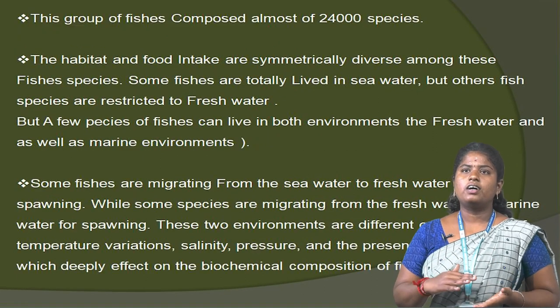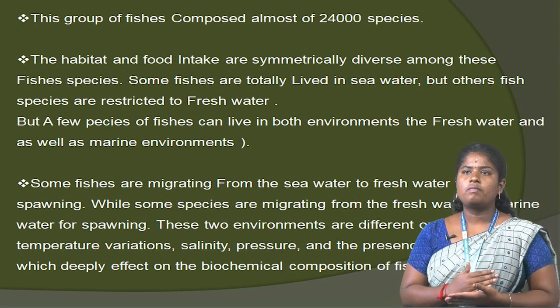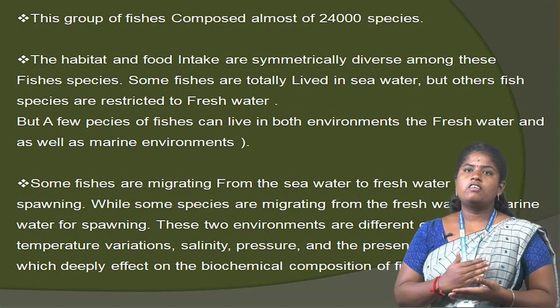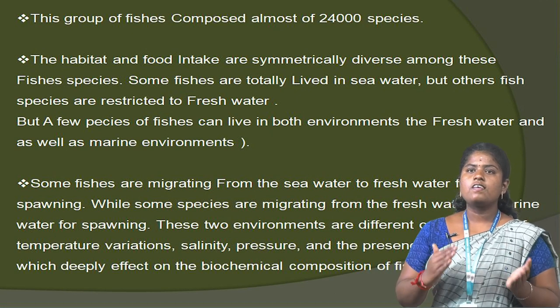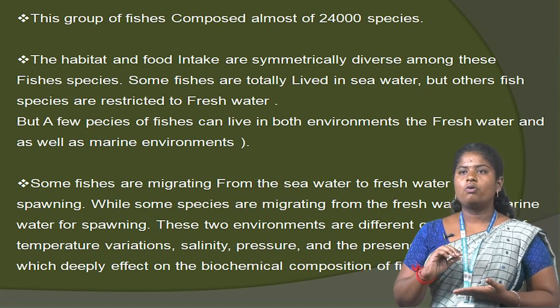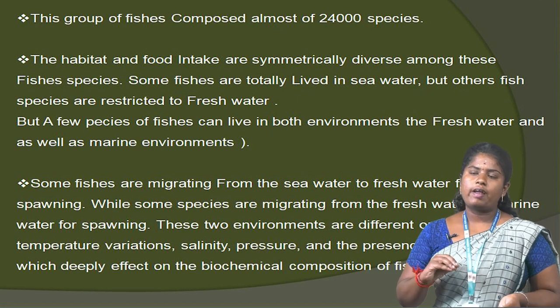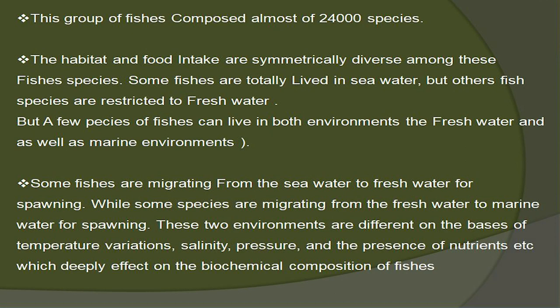This group of fishes is composed of almost 24,000 species. Habitat and food intake are symmetrically diverse among fish species. Some fishes are totally adapted to seawater but other fish species are restricted to freshwater. A few species can live in both environments — freshwater as well as the marine environment. Some fishes migrate from seawater to freshwater for spawning, while some species migrate from freshwater to marine water for spawning. These two environments differ on the basis of temperature variation, salinity, pressure and the presence of nutrients.